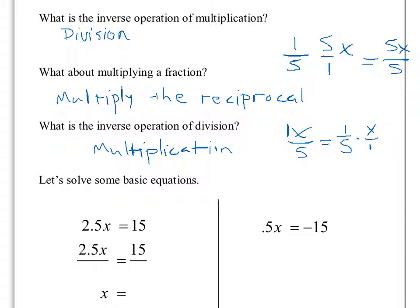And if I wanted to multiply by the reciprocal of this 1 over 5, I'd be multiplying by 5 over 1 — so multiplying by 5. So we can see that this inverse operation is really just a multiplication of the reciprocal, either way. When we're always talking about divisions or multiplications, we're always multiplying by the reciprocal. It just looks a little bit different.